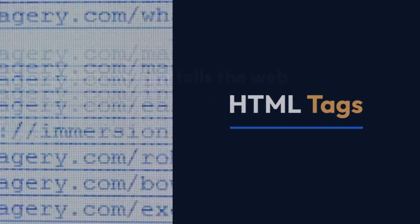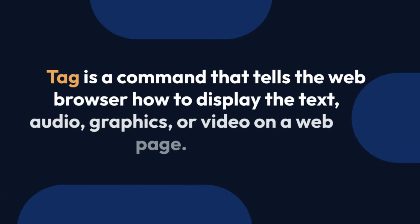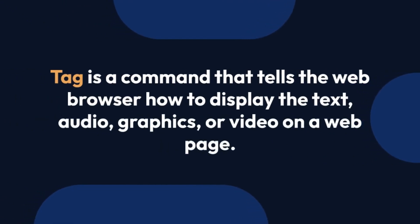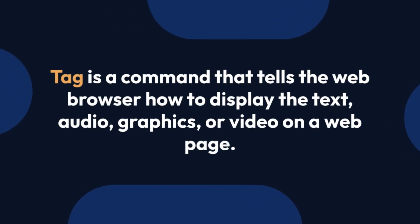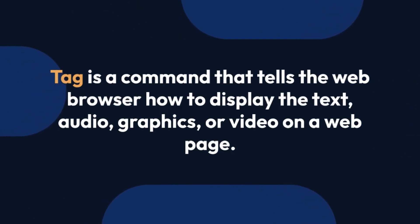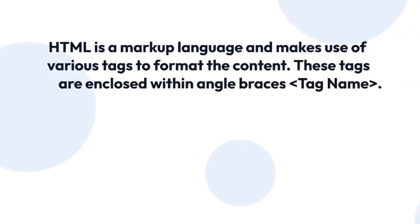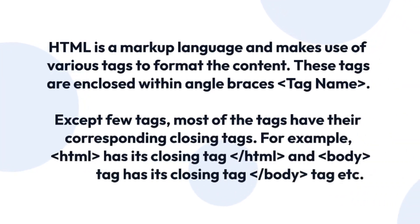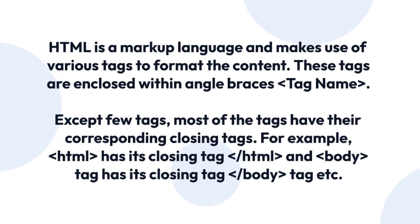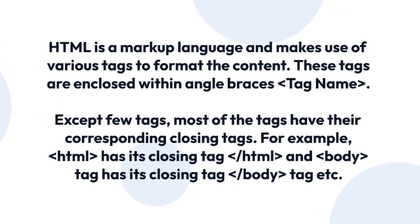HTML tags. A tag is a command that tells the web browser how to display the text, audio, graphics, or video on a web page. HTML is a markup language and makes use of various tags to format the content. These tags are enclosed within angle brackets. Except for a few tags, most tags have their corresponding closing tags.